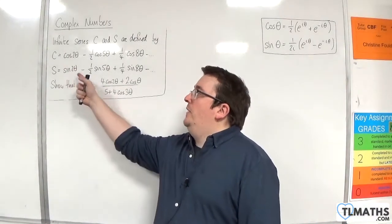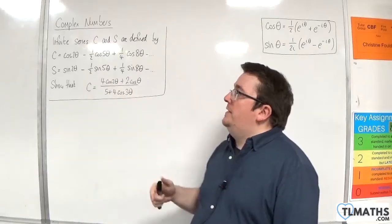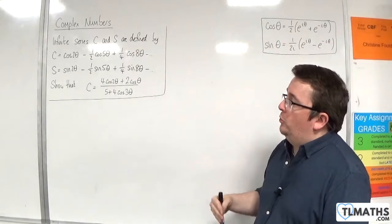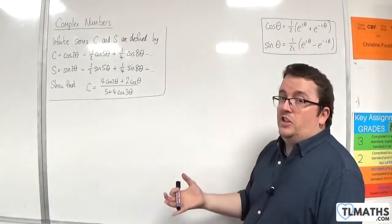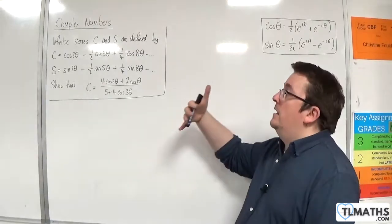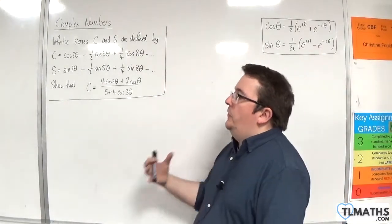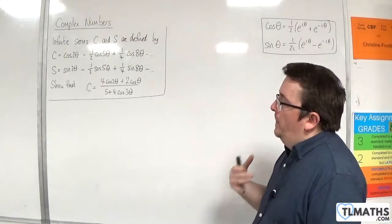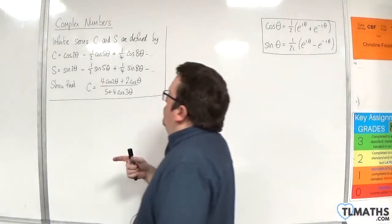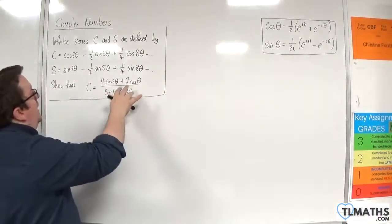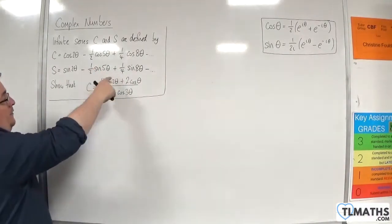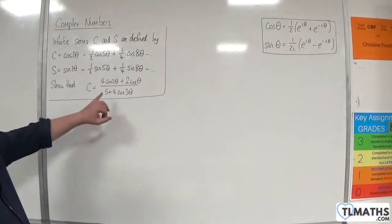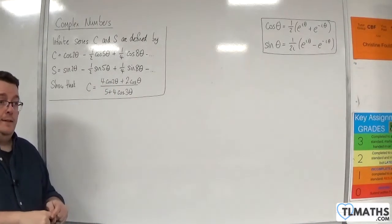And capital S is sine of 2θ, take away one-half of sine 5θ, plus one-quarter of sine 8θ, take away one-eighth sine of 11θ, etc. Show that C equals 4cos2θ plus 2cosθ, over 5 plus 4cos3θ.